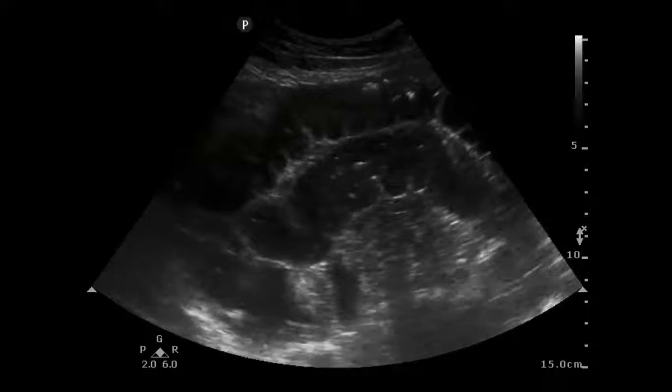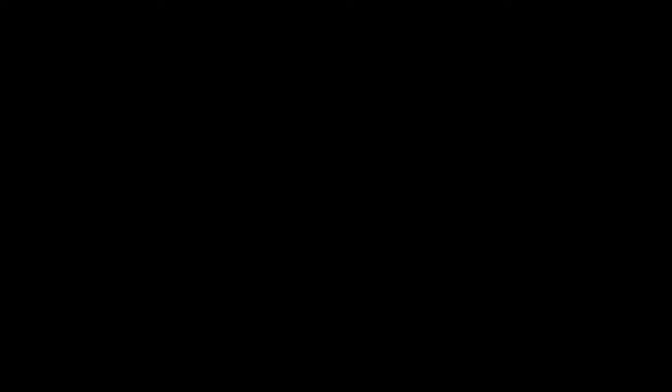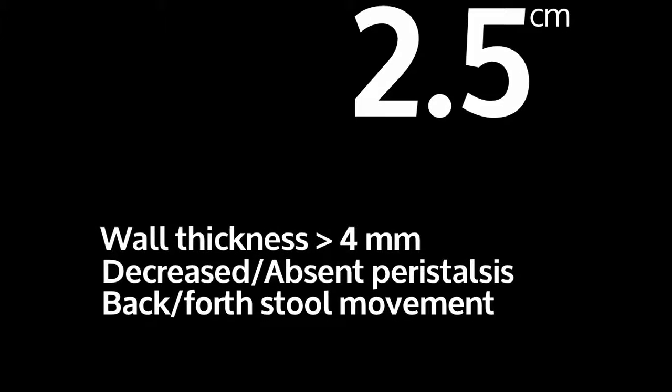This patient here also has a small bowel obstruction. If you remember one number, remember 2.5 centimeters. If the bowel diameter is greater than 2.5 centimeters, suspect a small bowel obstruction. There are a couple of other signs you can look for: wall thickness greater than 4 millimeters, and decreased or absent peristalsis or back and forth stool movement, as we mentioned earlier.